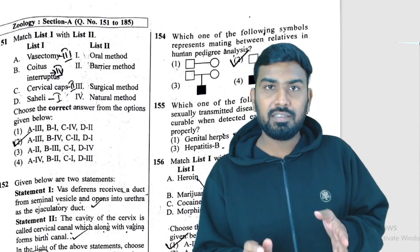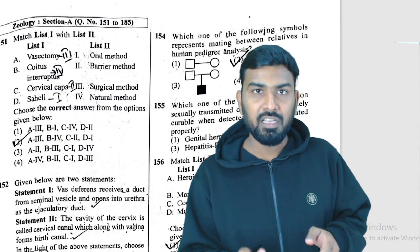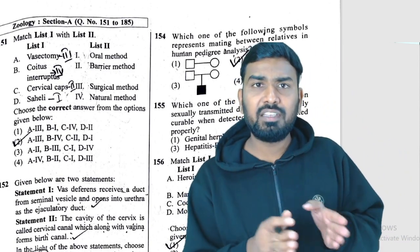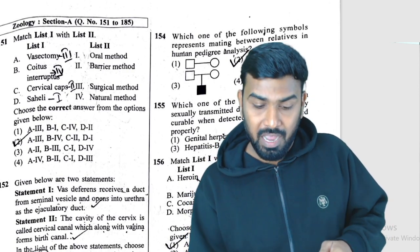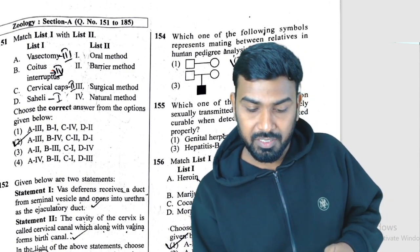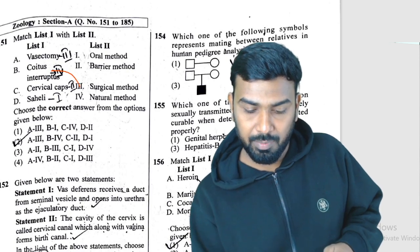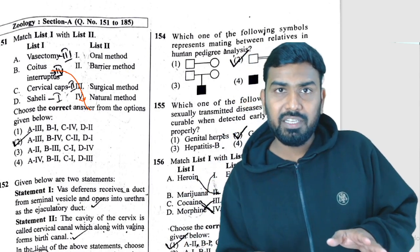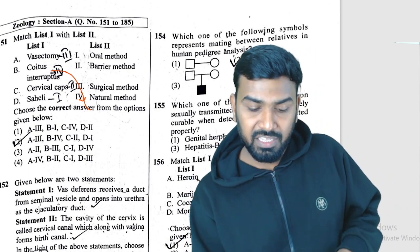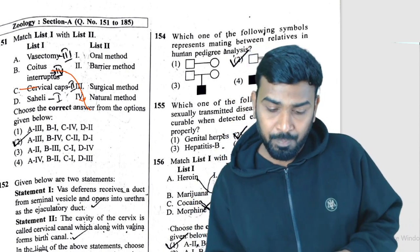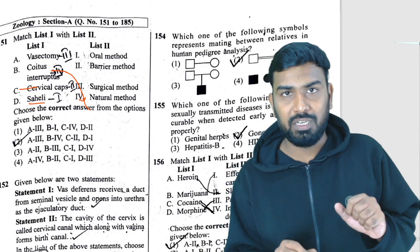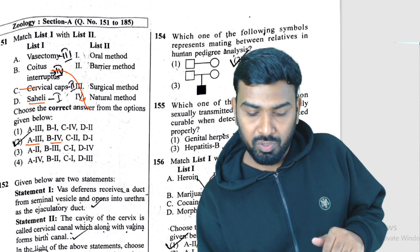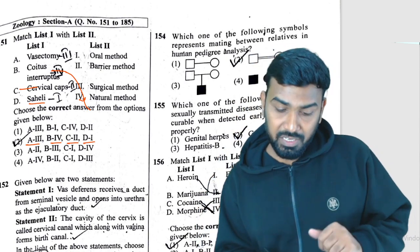Let us discuss NEET 2023 Zoology question paper. Question 151: vasectomy and tubectomy are surgical methods. Coitus interruptus is a natural method — during the course of coitus it is interrupted. Cervical cap and diaphragm are barriers. Saheli is an oral contraceptive pill. So the answer is: A-3, B-4, C-2, D-1.